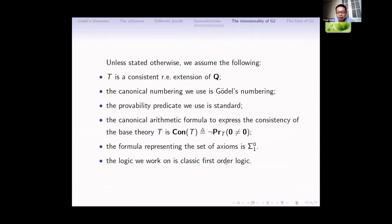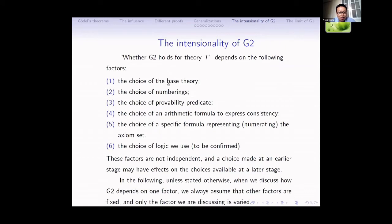In the following discussion of the intentionality of G2, we assume: T is a consistent RE extension of Q; the canonical numbering is Gödel numbering; the provability predicate we use is standard; we use canonical arithmetical formulas to express the consistency of T; the formula representing the axiom set of the base theory is sigma-1; and the logic is classical first-order logic. Whether G2 holds for T depends on the following factors: the choice of the base theory, the choice of the numbering, the choice of the provability predicate, the choice of arithmetic formula to express consistency, the choice of formula numbering for the axiom set of the base theory, and the choice of logic. The last factor is to be confirmed — I see a preprint claiming G2 does not hold in some non-classical logic, but it is not yet published.